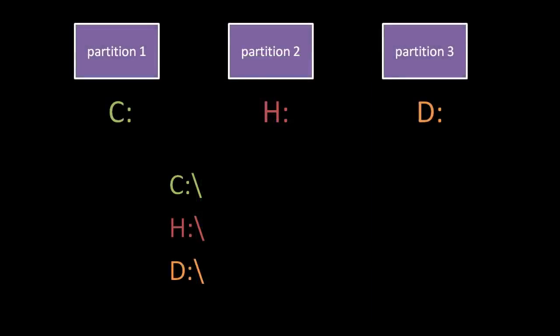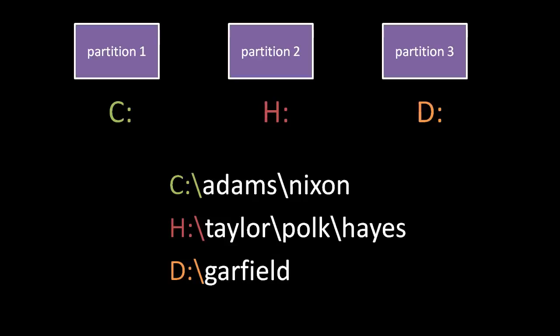In Windows, each partition is assigned a drive letter, usually denoted with a suffixed colon — for example, C:, H:, D:, etc. A file path is a string of text denoting the location on a system of a file or directory. In Windows, the root directories on these drives are known by the paths C:\, H:\, and D:\ respectively. For example, C:\Adams\Nixon refers to a file or directory named Nixon, listed in a directory Adams, itself listed in the root directory on the C: partition. The path H:\Taylor\Polk\Hayes refers to a file or directory named Hayes, listed in a directory Polk, listed in a directory Taylor, listed in the root directory on the H: partition. While the preferred convention in Windows file paths is to use backslashes, forward slashes work just as well.